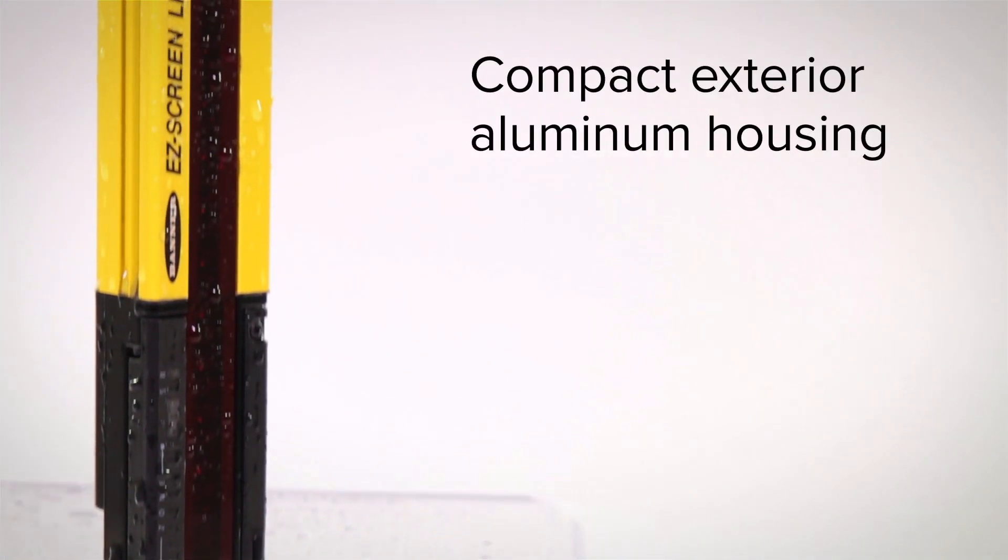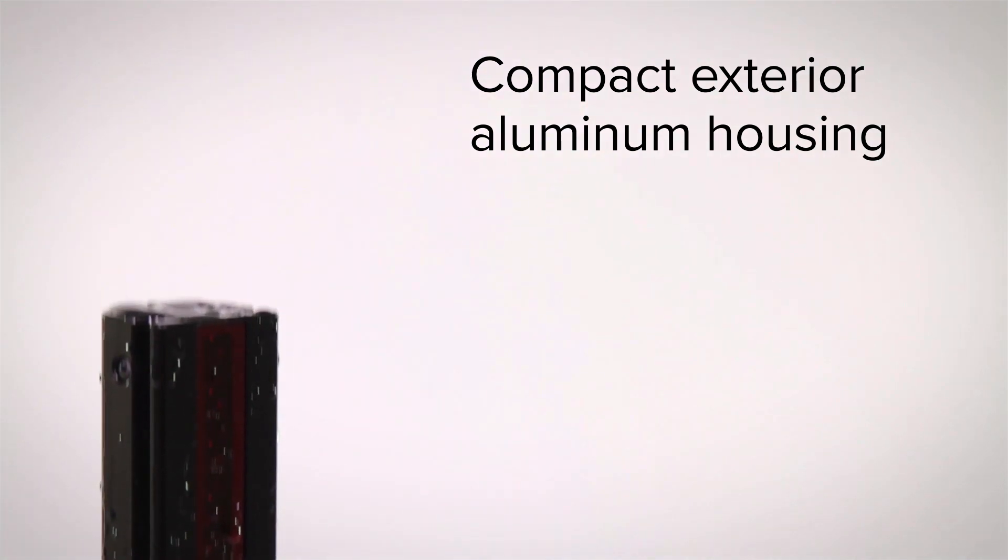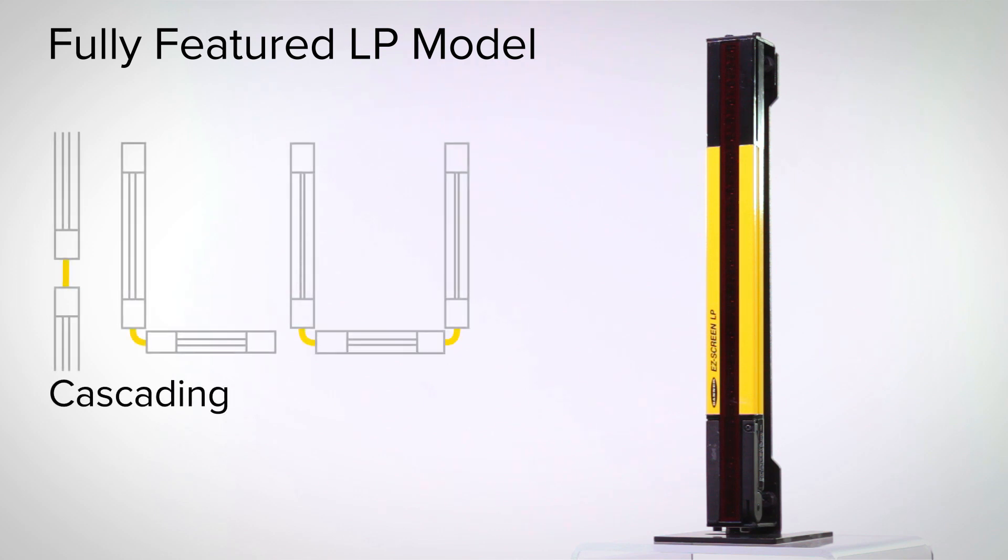The EZ Screen LP Basic and LP have compact exterior aluminum housings. For more advanced applications, the EZ Screen LP is a fully featured model with a wide range of options and is available in cascading, integral muting and ESD safe models.